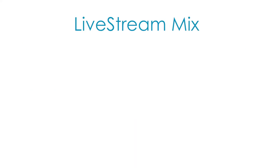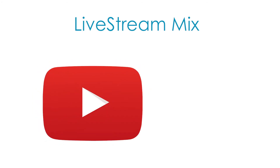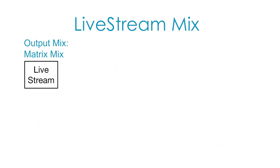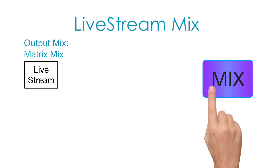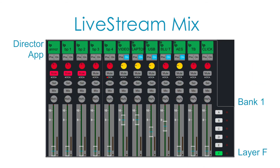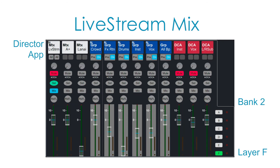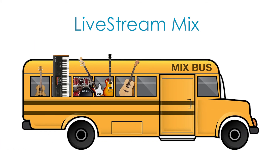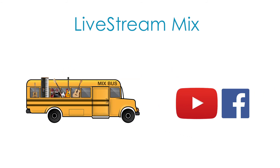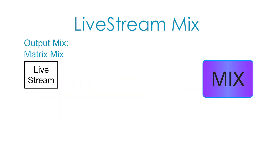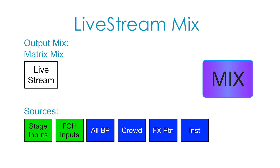The live stream mix is sent to YouTube and Facebook. The output mix type is a matrix mix. Pressing the blue mix button on the live stream channel will move all faders assigned to that mix, and this mix will then be routed on a bus to its final destination. Like the main mix, most of the sources are made up of group mixes as well as direct inputs from the stage and front of house.